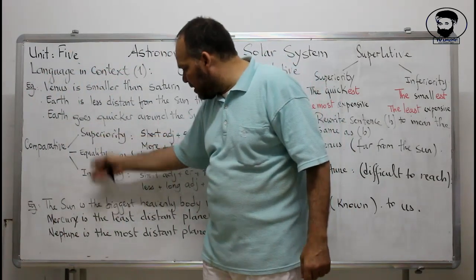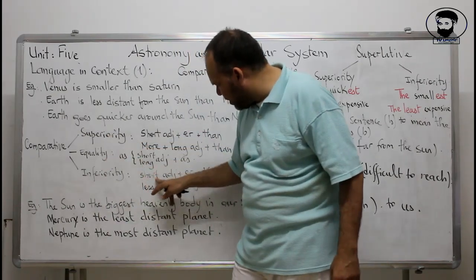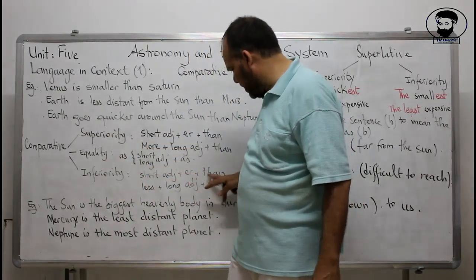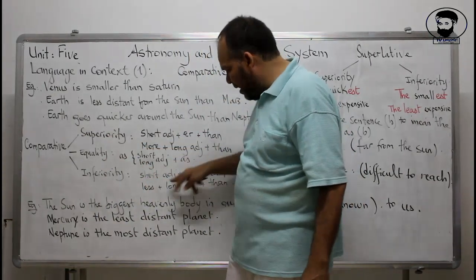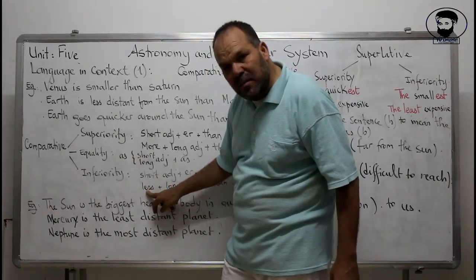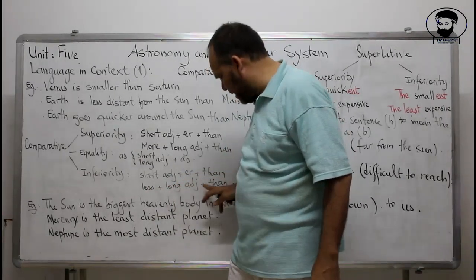For inferiority, the rule is the same: short adjective plus -ER plus 'than.' When the meaning is negative or inferior, you use LESS plus the long adjective plus 'than.'